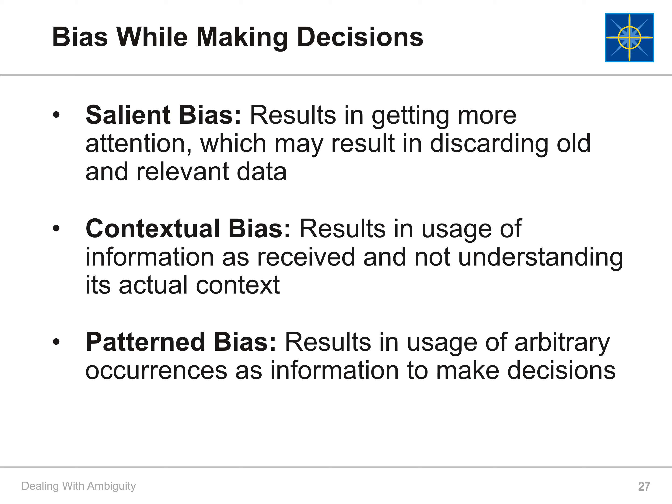Using the same examples as earlier, we can see some of the bias that may impact decision-making. Salient data, which is startling, could create a bias where the most shocking statistics get the most attention, eclipsing more relevant data. With contextual bias, we may take the data as a rule without understanding the bigger picture. Finally, patterned bias leads us to assume patterns exist that don't. All of this hinders our ability to make effective decisions.